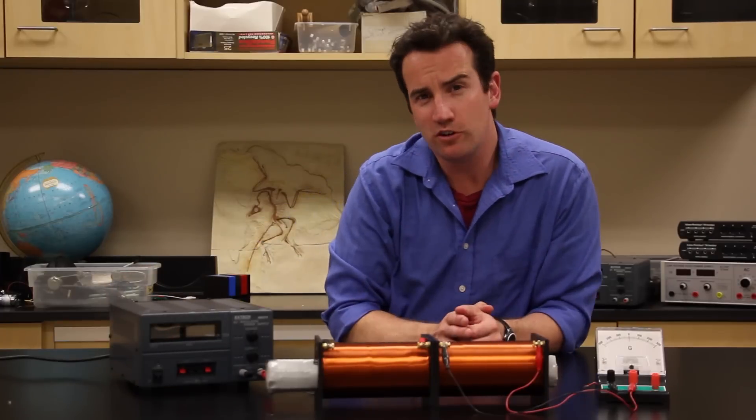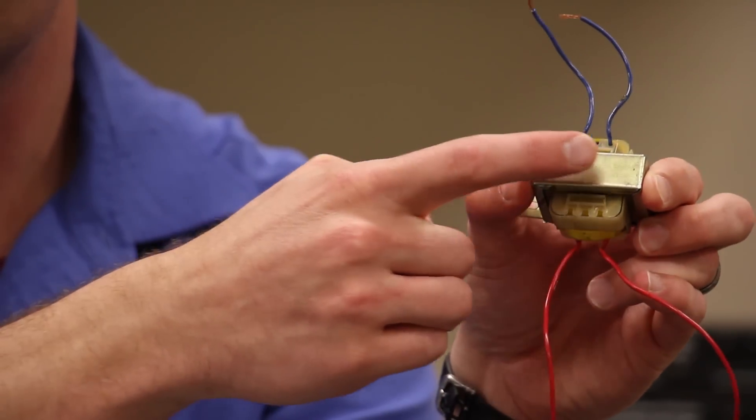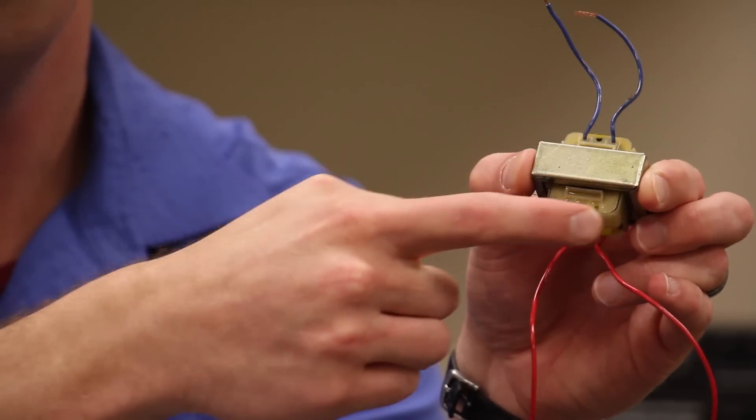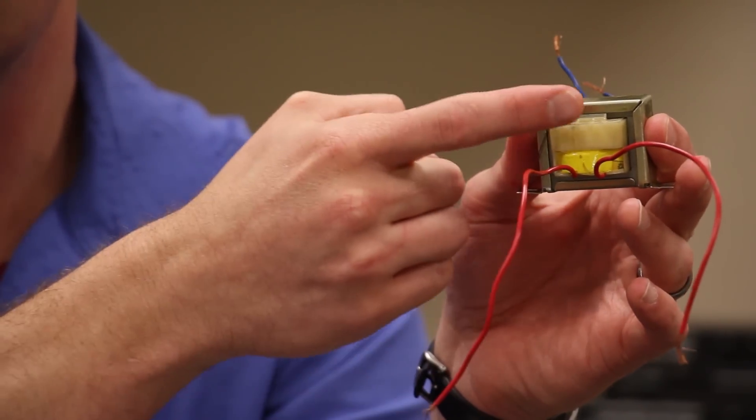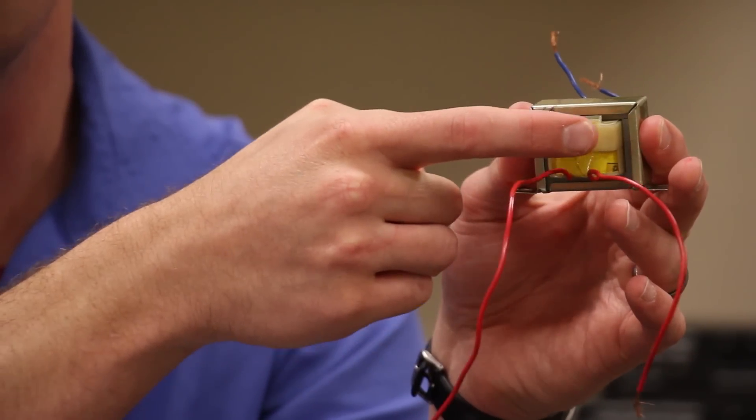The transformers found in home appliances usually look like this. Here are the coils, which are wound on top of one another, and this surrounding structure is soft iron shaped to guide the magnetic field lines back around and through the coils.